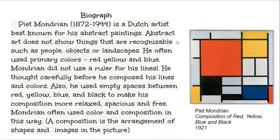He often used primary colors — red, yellow, and blue. Mondrian did not use a ruler for his lines. He thought carefully before he composed his lines and colors.